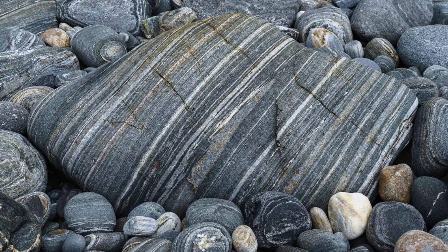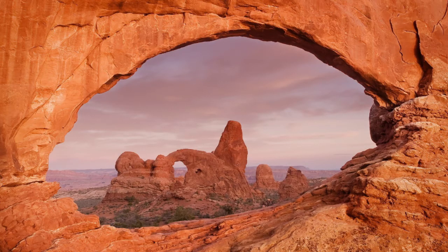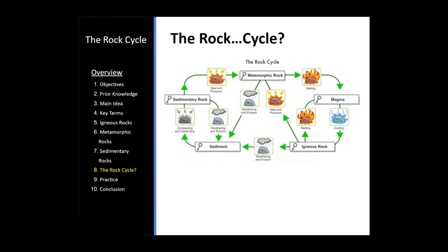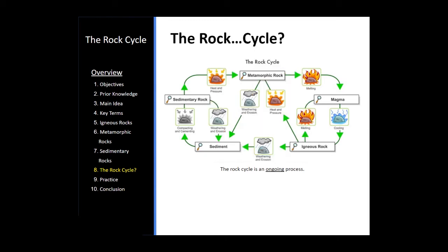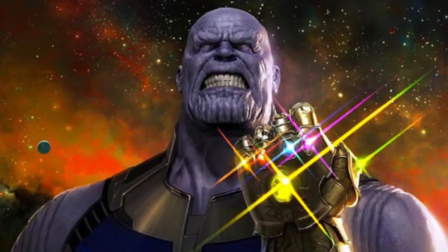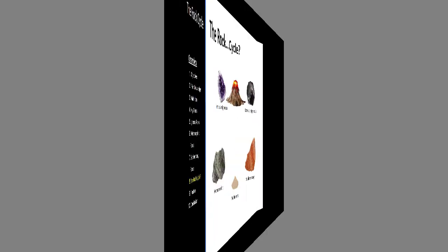So igneous could become metamorphic, metamorphic could become sedimentary, sedimentary could become another sedimentary rock. So the rocks on earth's surface are not going in a circle and it is an ongoing process. It never ends because matter in the universe is not created or destroyed. It's just constantly changing. And the rock cycle is a great example of that.